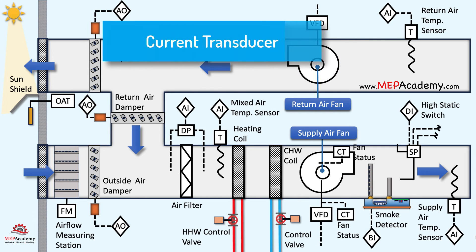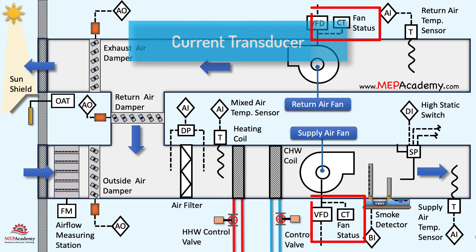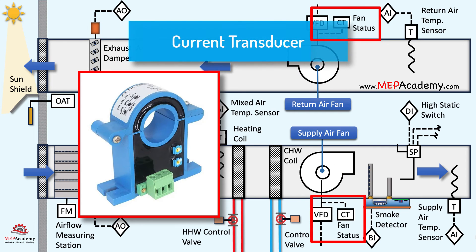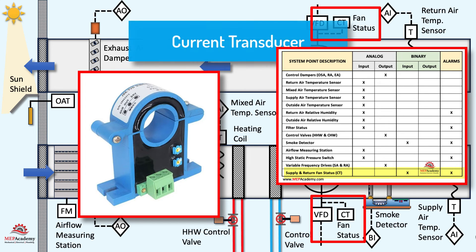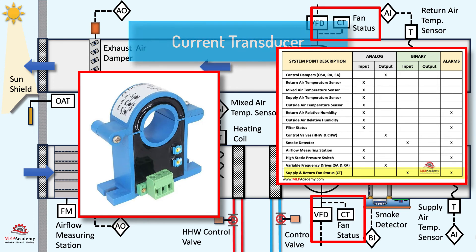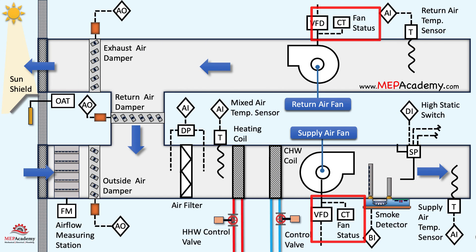The current transducer is used to confirm that the fan is running. The current transducer detects current flowing through the electrical power cables serving the fan. There will be one for the supply fan and another for the return fan.